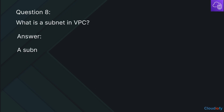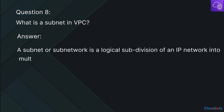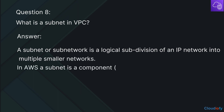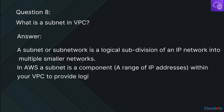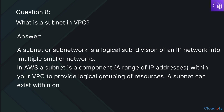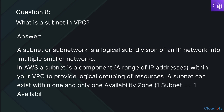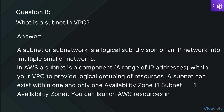The next question is: What is a subnet in VPC? A subnet, or subnetwork, is a logical subdivision of an IP network into multiple smaller networks. In AWS, a subnet is a component — a range of IP addresses — within your VPC that provides logical grouping of resources. A subnet can exist within one and only one availability zone; one subnet equals one availability zone. You can launch AWS resources into any selected subnet.